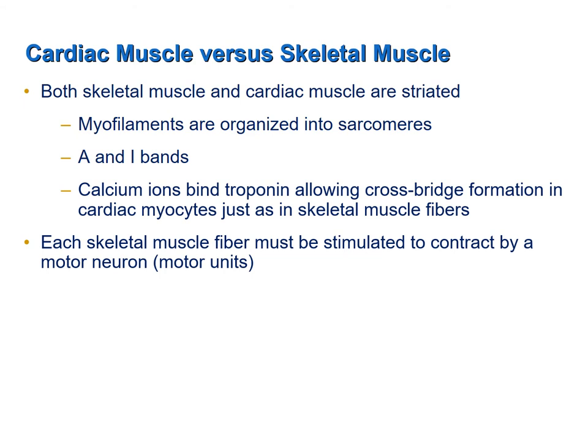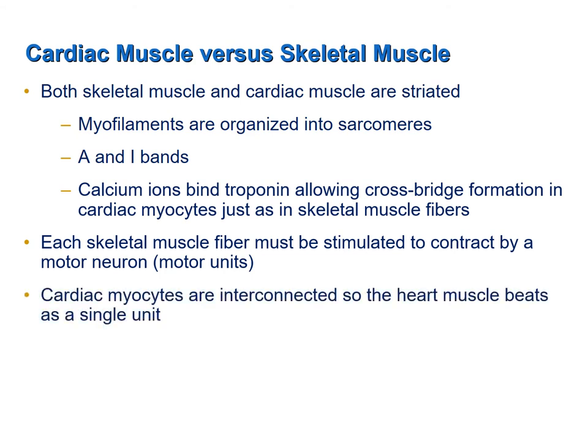Gap junctions are communicating junctions. They allow ions to move from one cell to the next. So if an action potential occurs in one cardiac myocyte, ions can flow from that cell to the adjacent cardiac myocyte, effectively conducting an action potential to the next cell — and from that cell to the next, and so on. This interconnectivity allows all of the myocytes in a chamber to contract at the same time, ensuring that the heart muscle beats as a single unit.